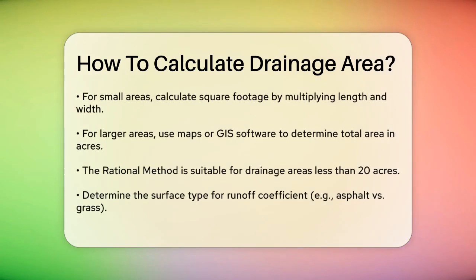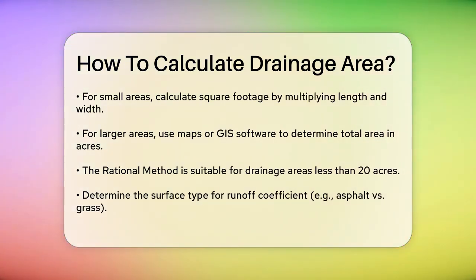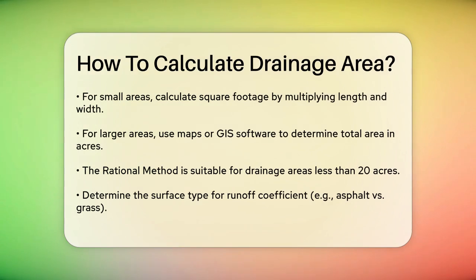For small areas like rooftops or parking lots, you can simply calculate the square footage by multiplying the length and width of the area. For larger areas, you might need to use a map or GIS software to determine the total area in acres. The rational method, which is commonly used for small drainage areas, requires the area to be less than 20 acres for best results.